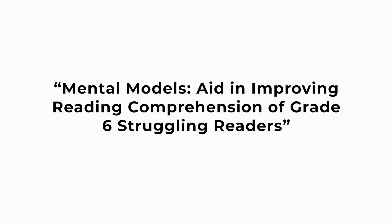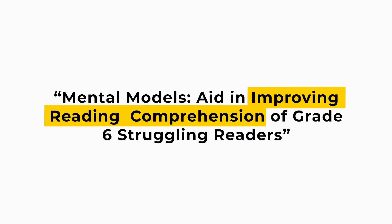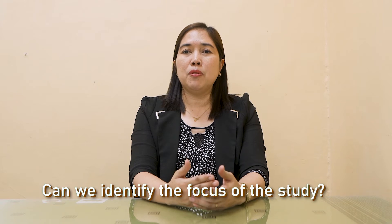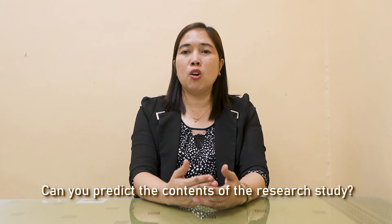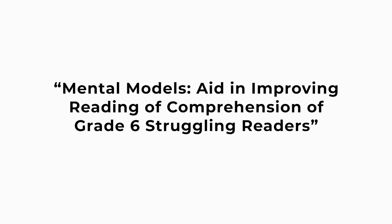Let me give you some examples of a research title and check if they contain the basic components. First example: 'Mental models aid in improving reading comprehension of grade 6 struggling readers.' At a glance, the reader can easily understand that the Action Research is conceptualized to improve the reading comprehension of grade 6 struggling readers by using mental models. By just looking at the title, we are informed that the study will be about using mental models in improving the reading comprehension of grade 6 struggling readers.